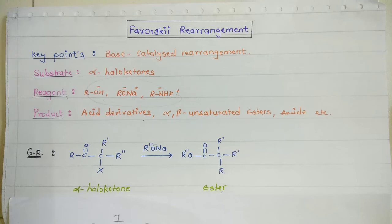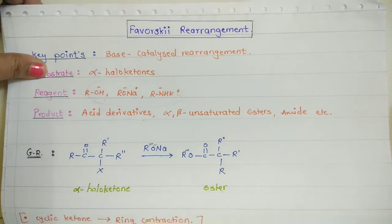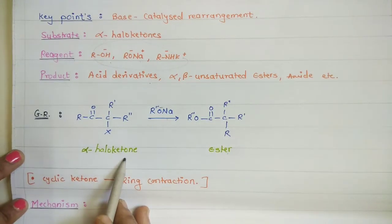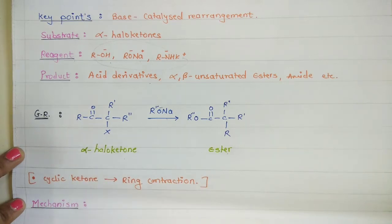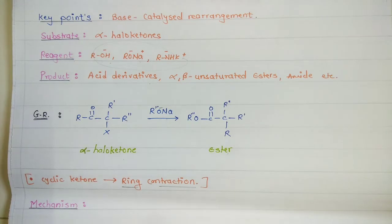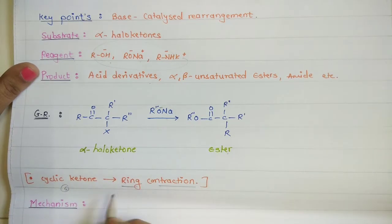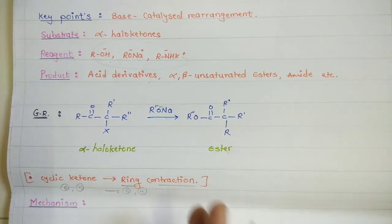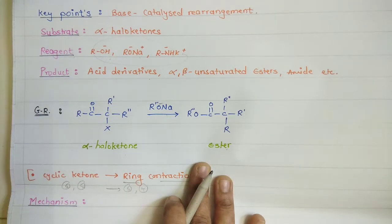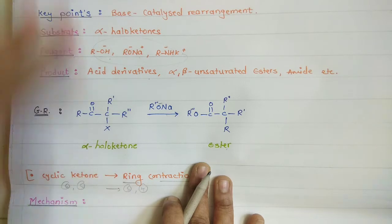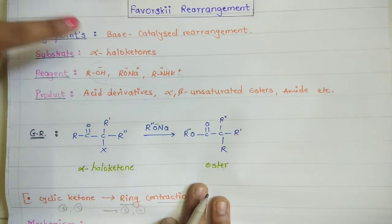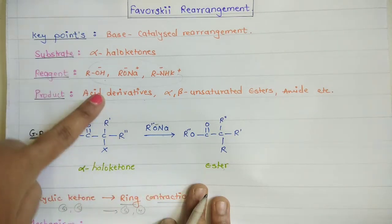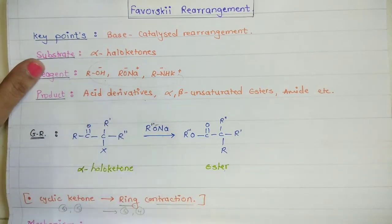One important point: if the alpha haloketone is a cyclic ketone, ring contraction will take place. If you have a six-membered ring, the main product will have a five-membered ring; a five-membered ring gives a four-membered ring. So in summary, the Favorskii rearrangement is a base-catalyzed reaction in which an alpha haloketone is converted into an ester, acid, or amide depending on the reagent.